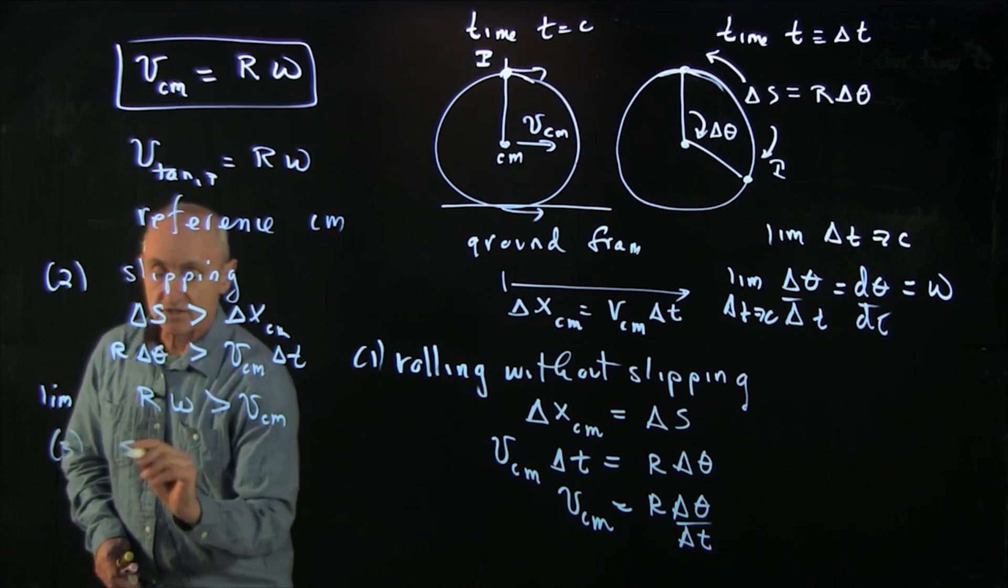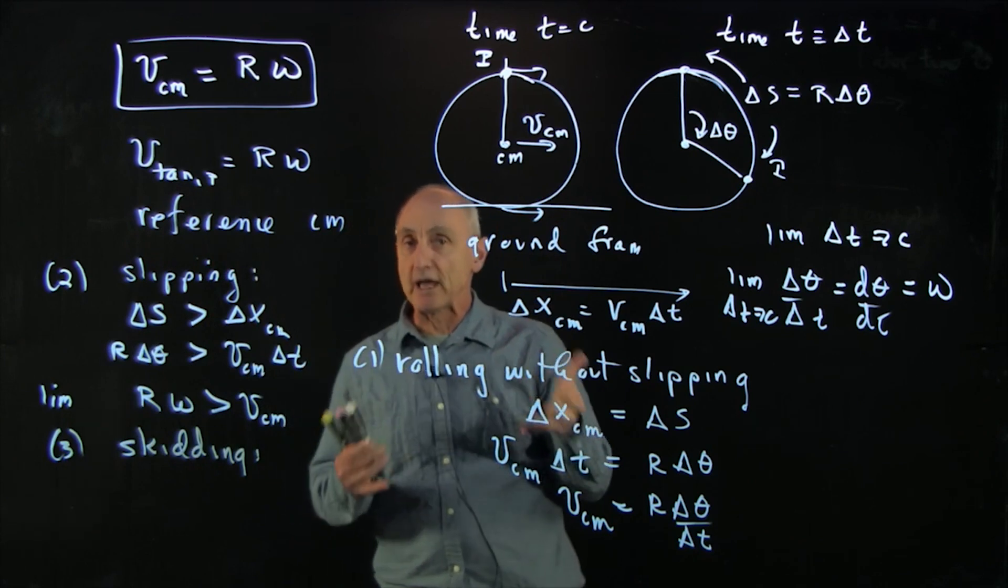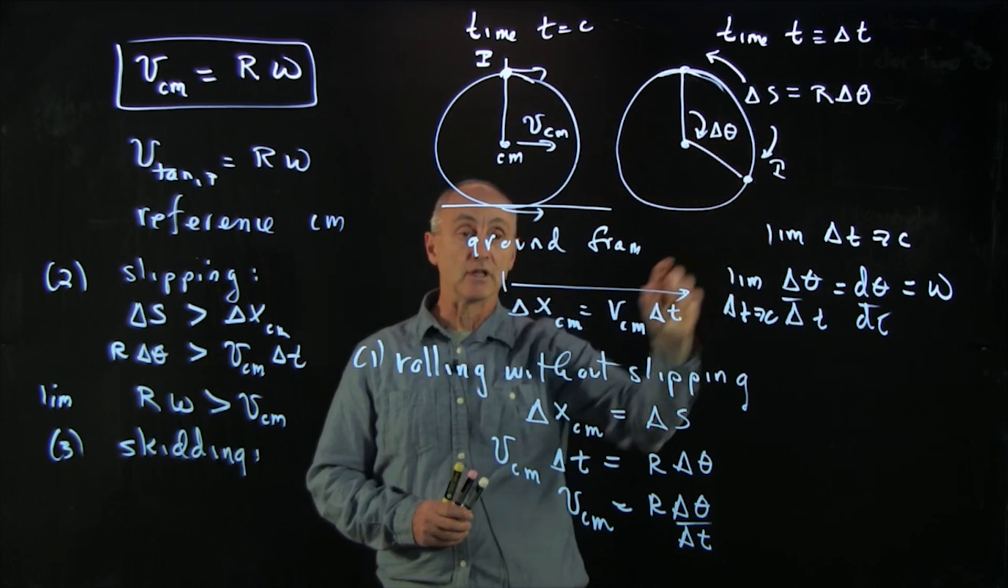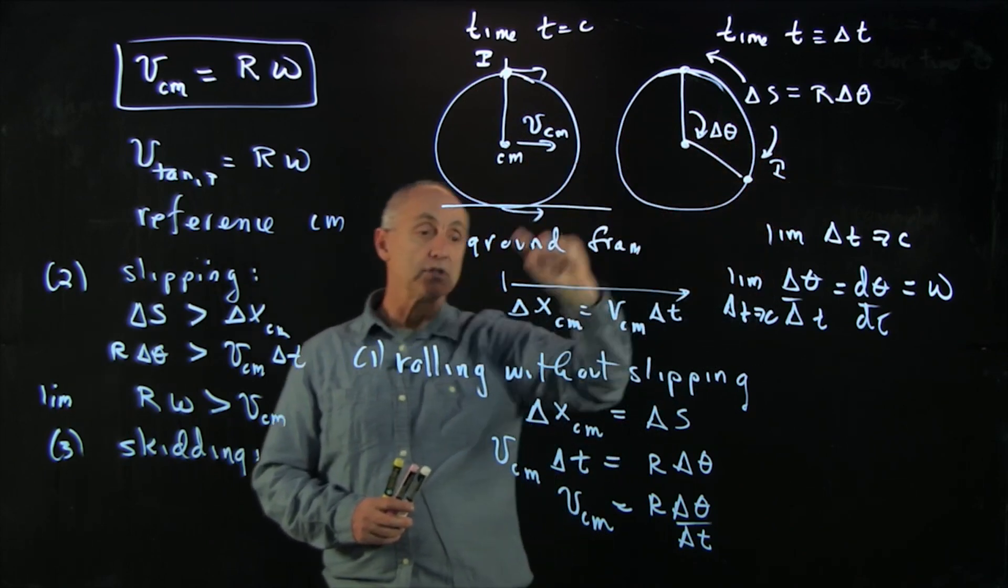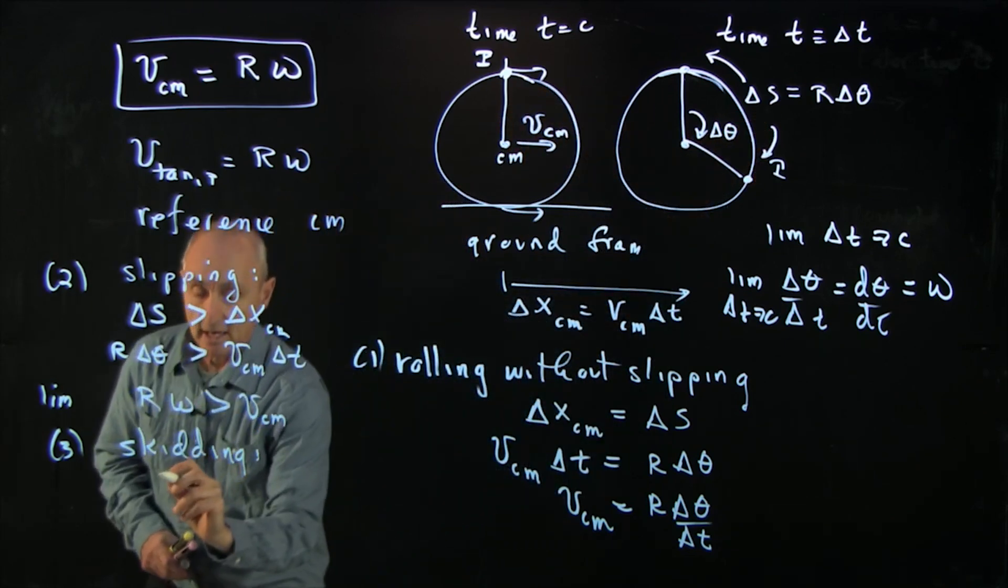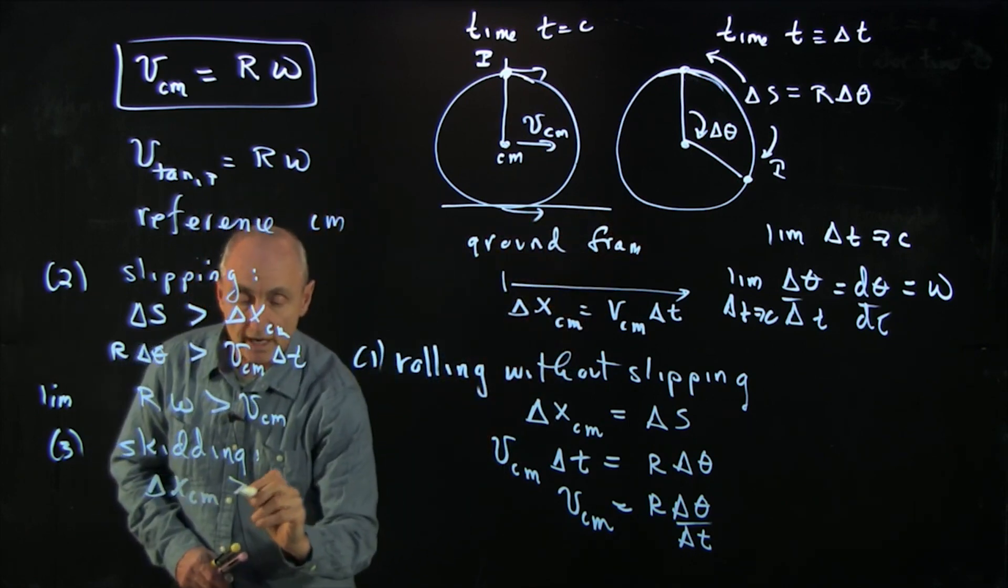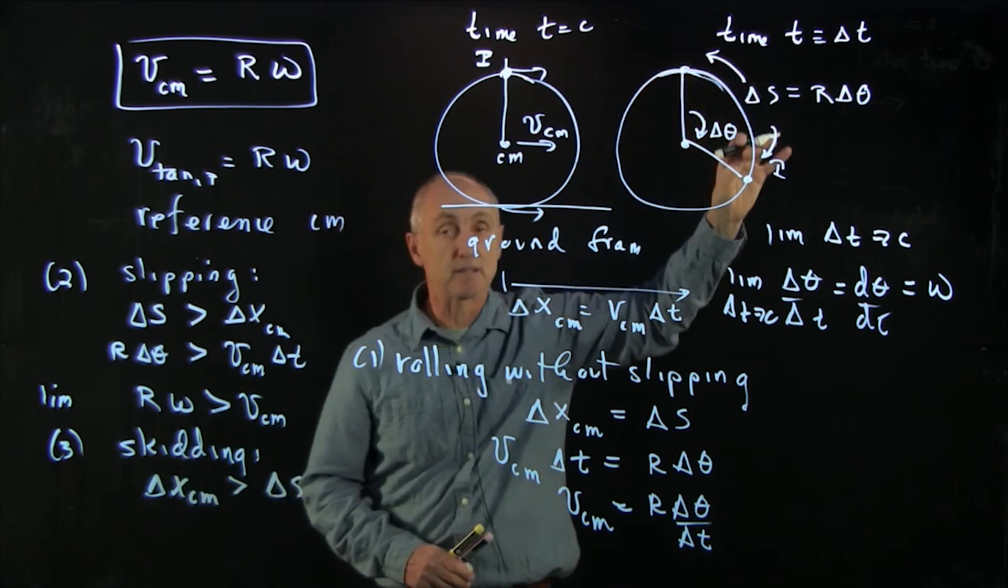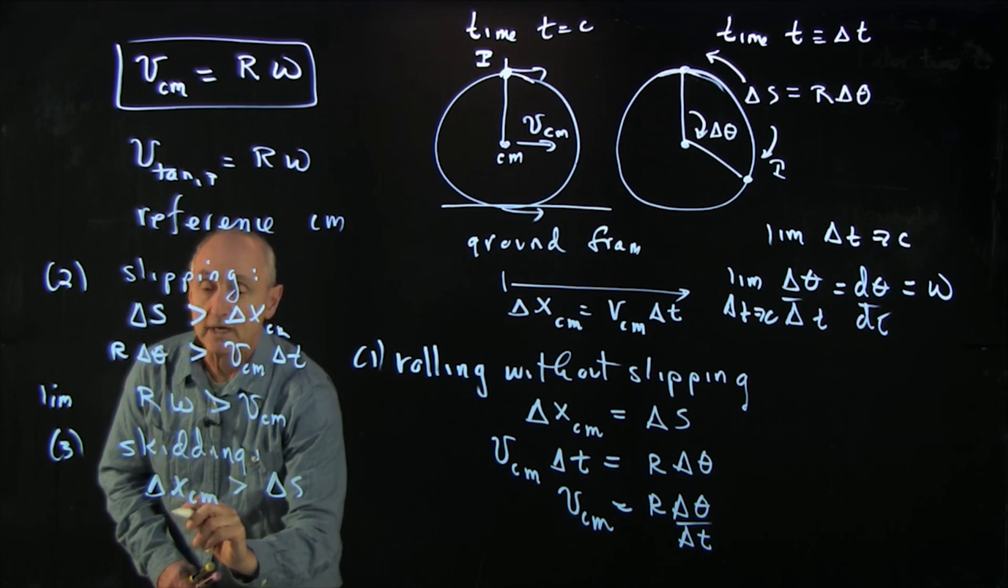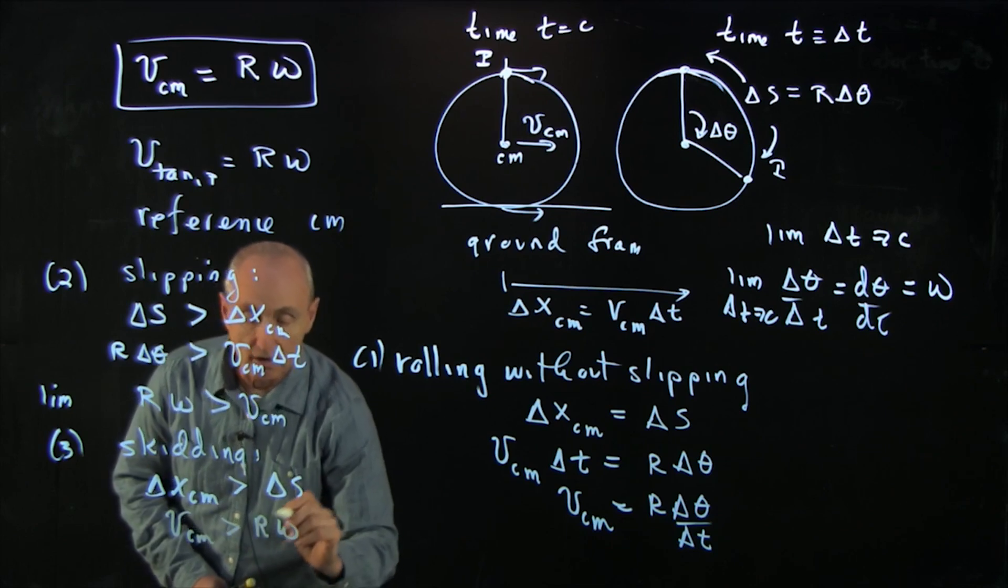And finally, the skidding condition. Skidding, imagine that the wheel, you're braking a wheel. The wheel is not spinning at all, but it's just sliding along horizontally. So the horizontal delta x center of mass is bigger than delta s cm. And so this is the case where delta x cm, how far it moved horizontally is greater than the amount of arc length that that point moved. And so in the same type of argument, when we put our conditions in, we get that v cm is greater than r omega.